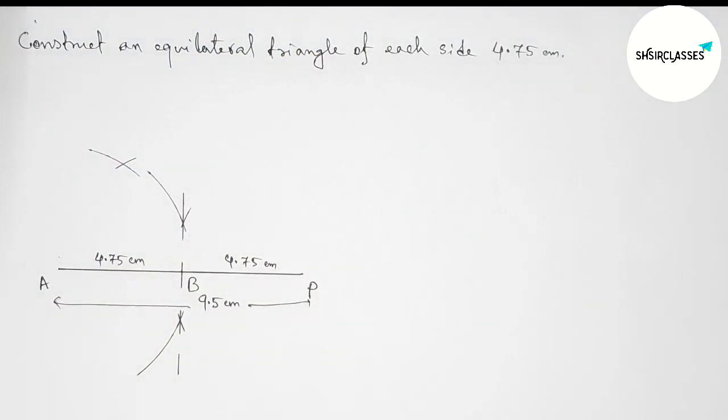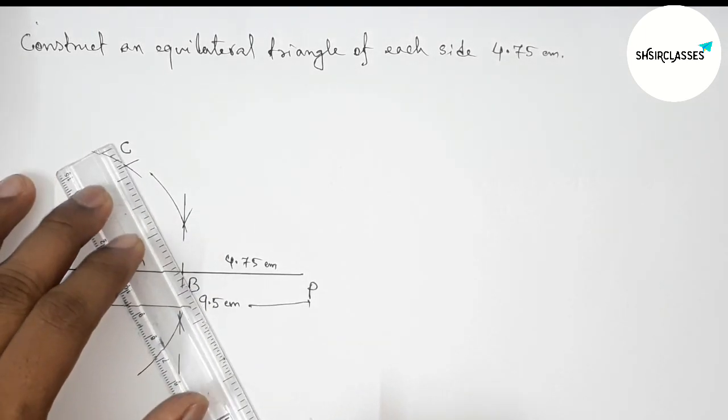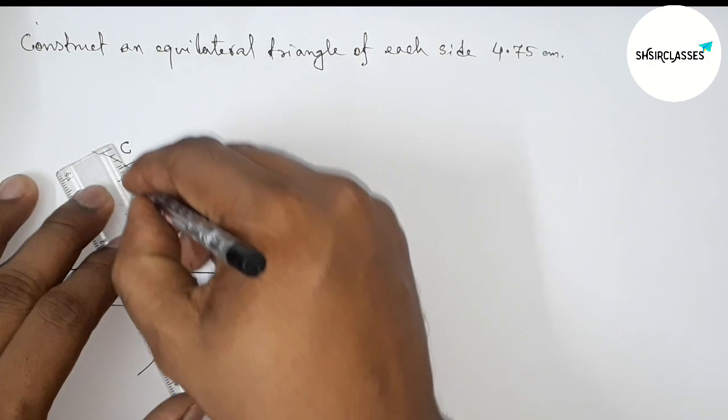Cut here, so now both the curves meet here at a point C. So now joining first the side BC.